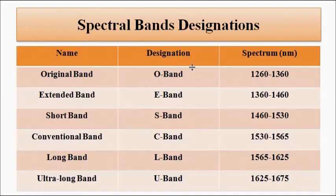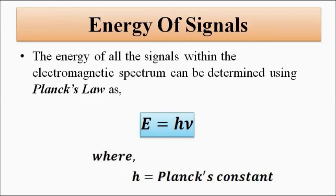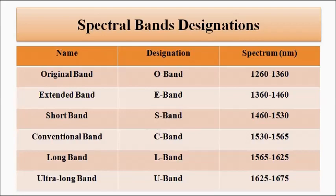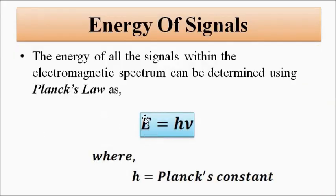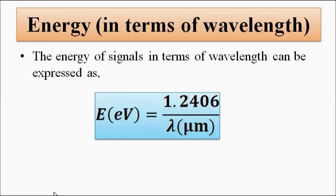These are the general spectral band designations for optoelectronics communication systems. Associated with this optical communication is the energy of signals. The energy of signals within these six spectral bands, defined by their wavelengths or frequencies, can be given by Planck's Law: E = hν, where ν is the frequency and h is Planck's constant.